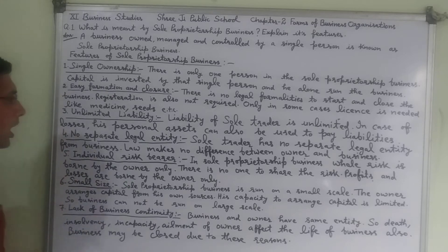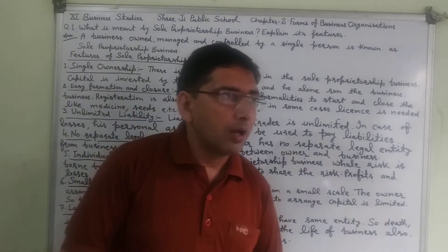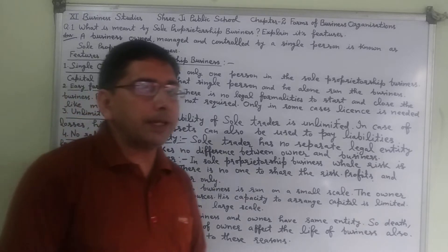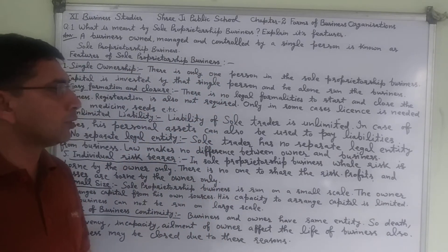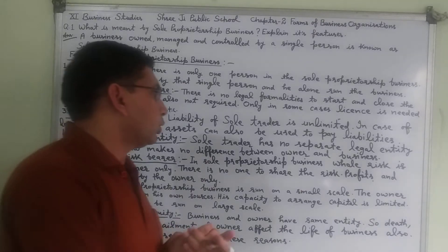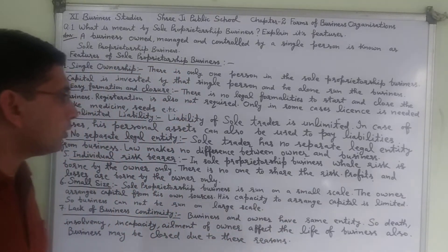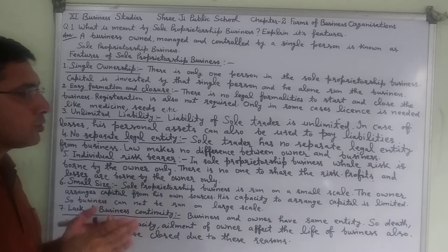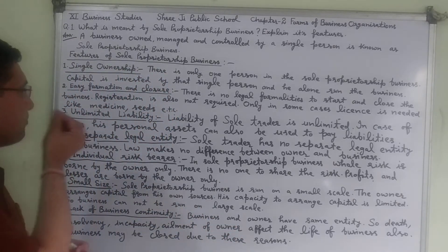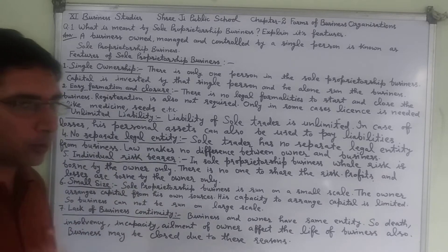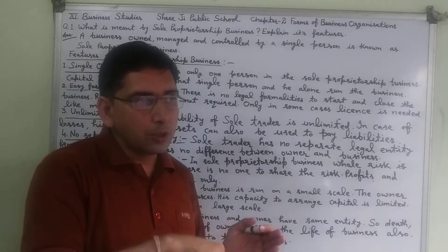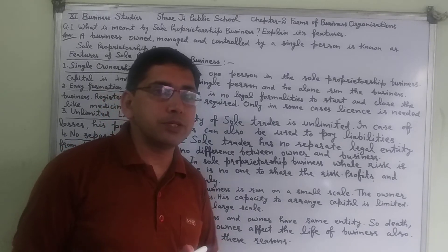The third feature is unlimited liability. Unlimited liability means there is no limit on paying liability. In case of losses, because only a single person is there, there is no one to share the liability. So he alone has to suffer and pay the liabilities. In case of losses, the personal assets of the owner can also be used to pay off the liabilities due of the business.